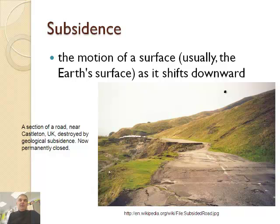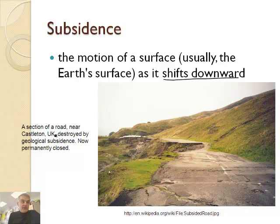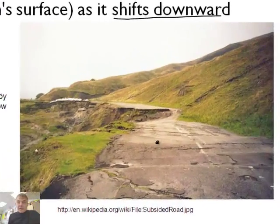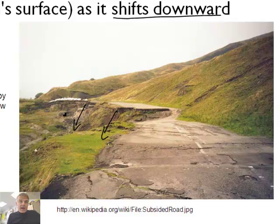Subsidence is the motion of a surface, usually on the Earth's surface, as it shifts downward. If you look right here, this is a section near Castleton, United Kingdom — like England — destroyed by geological subsidence and now permanently closed. You can see what's happening is that this has fallen. It's not just erosion; a lot of people think of this as erosion, but the entire ground has subsided.